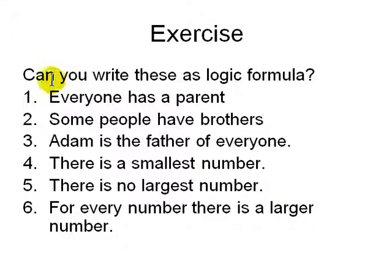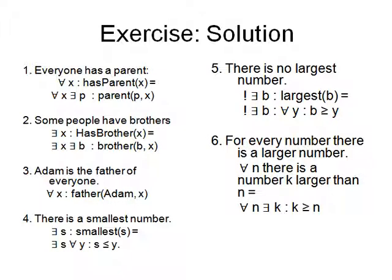You can try writing these: everybody has a parent, some people have brothers, Adam is the father of everyone, there is a smallest number, there is no largest number, for every number there is a larger number. You can try out and the solutions you can look up later. Thank you.